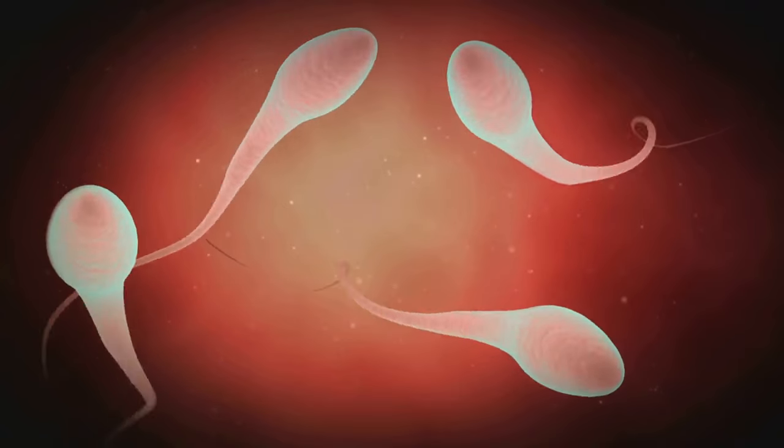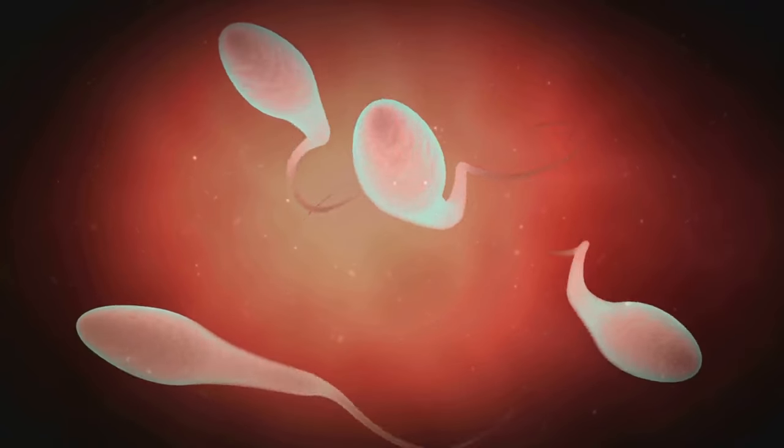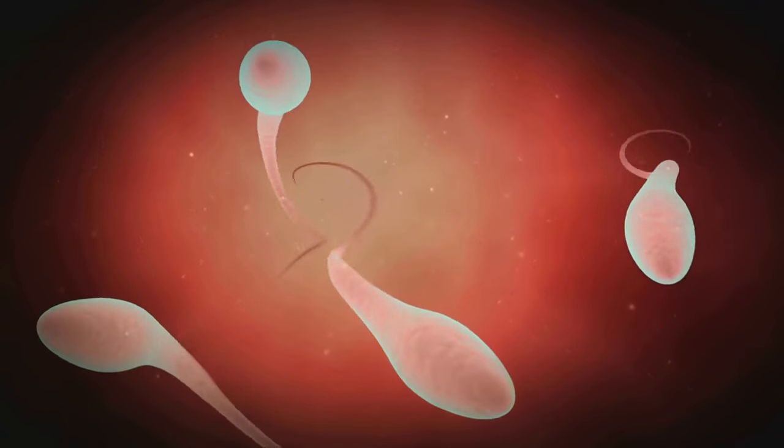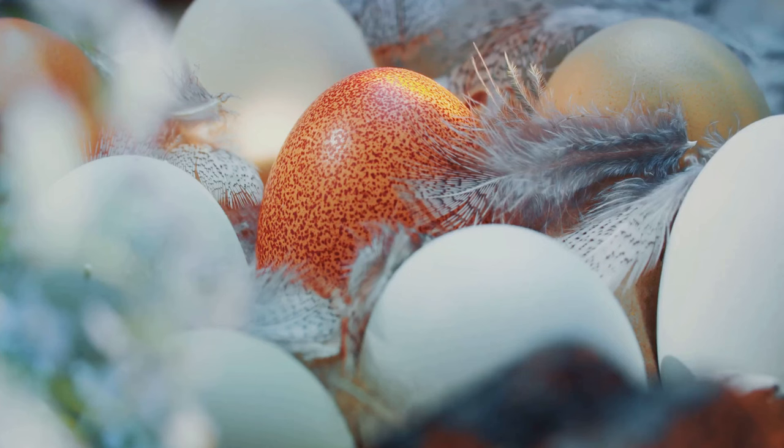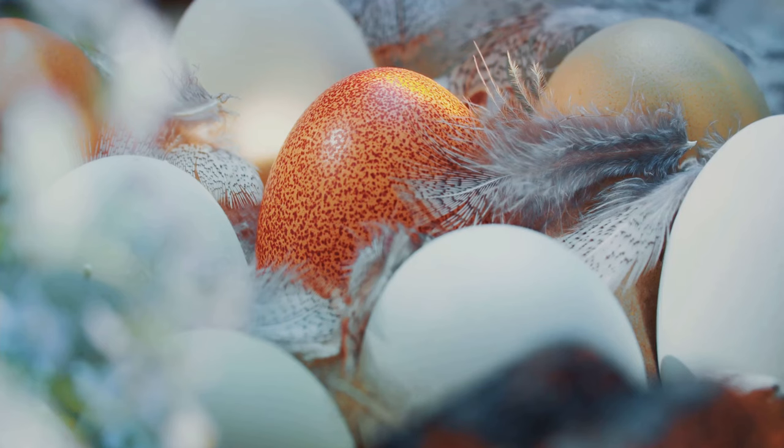By the time it reaches its destination, the sperm's mitochondria are practically spent, making them easy targets for destruction. On the other hand, the egg's mitochondria are fresh and ready to go. They're primed to provide the newly formed embryo with all the energy it needs to start growing and dividing.